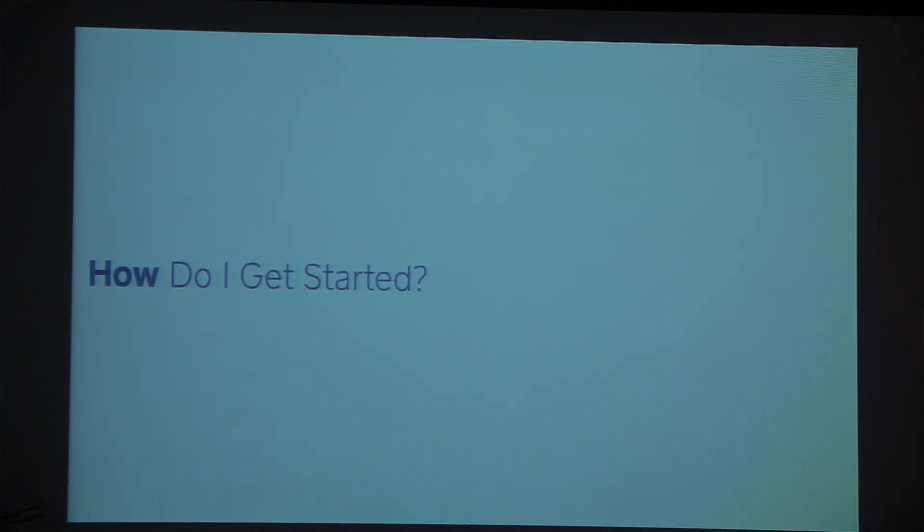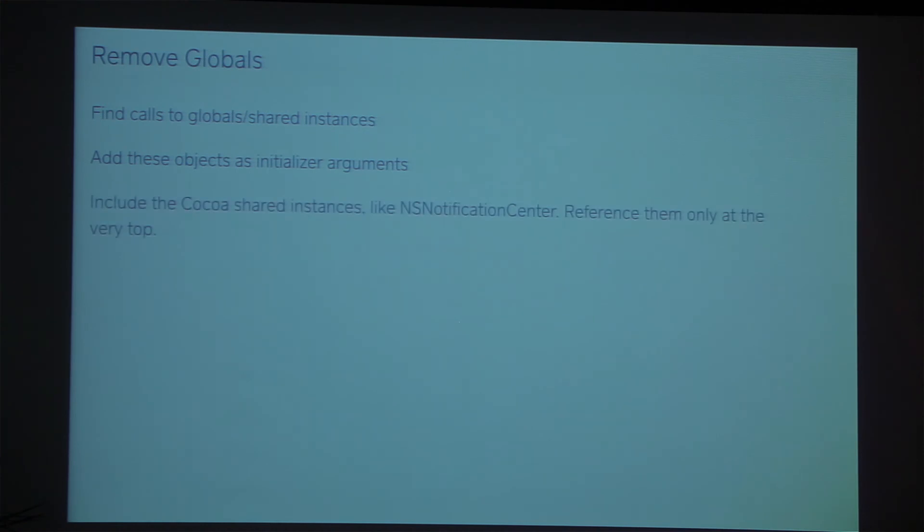All right. So hopefully this is a pattern you like and you want to get started. One really nice thing about dependency injection is you can literally take five minutes, make a small change, commit it, and improve your code base. And you don't have to do all or nothing. I'm going to describe a few ways that you can do this. And if you use them continuously, eventually you'll have a really nice code base. Number one, remove globals. This is one of the leading reasons for fragility in our code base because you have this shared state that you didn't know you had. And removing them is very simple. Go and find where they're referenced. Move them to an argument in the initializer. Just pass them in and then eventually they're all going to go away.